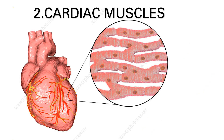The next type is cardiac muscle. These muscles bring about the contraction and relaxation of the heart. Their movement is involuntary. Cardiac muscles have to relax and contract continuously at a rate of about 70 times per minute.